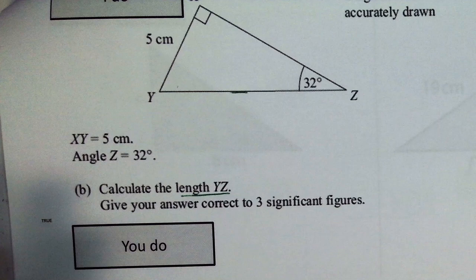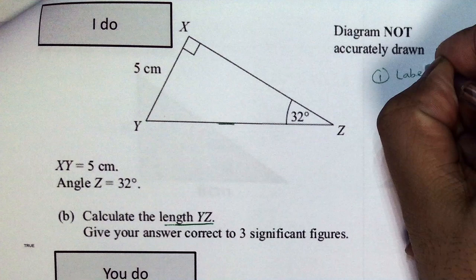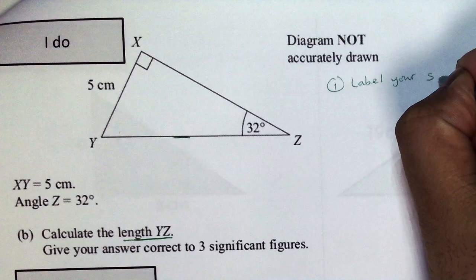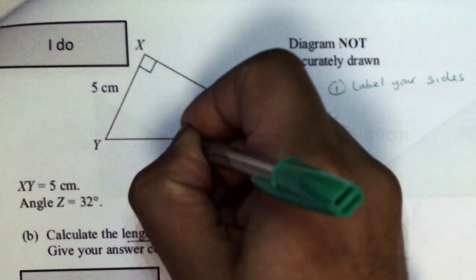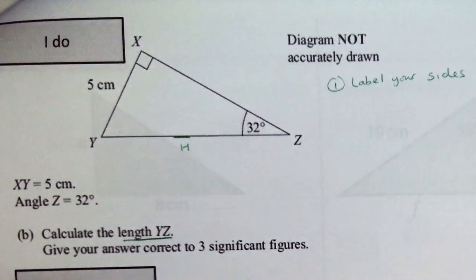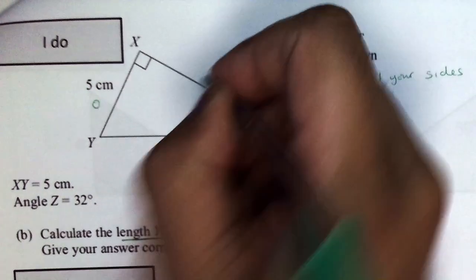So, that's that side there that we will be working on. Step one is to label your signs. So, there is my hypotenuse. And that is my opposite. And finally, that is my adjacent.